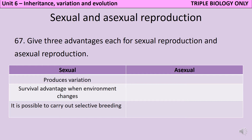On the flip side, asexual reproduction only requires one parent. This is particularly important if you're trying to colonise a new area. Say for instance that an animal has migrated further north in its range than any other individual of that species - if it can reproduce asexually then it can colonise the new area, whereas if it needs to wait for a mate then it won't be able to do so. Even if there are mates available, being able to reproduce asexually is going to be more time and energy efficient.